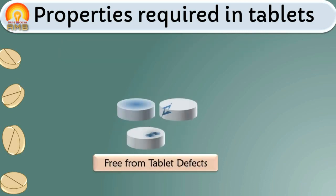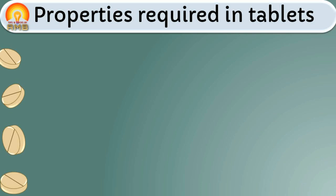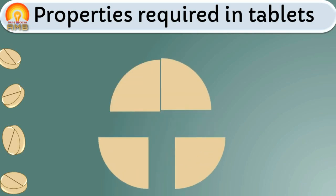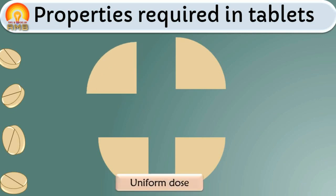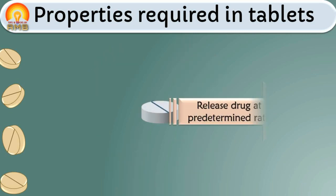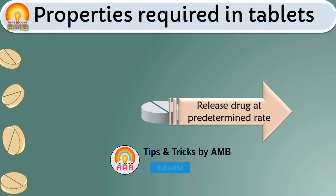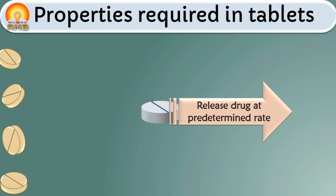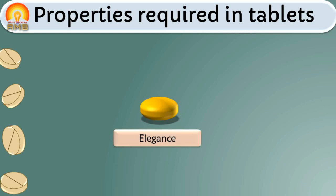Tablets should not have any defects like chipping, cracking, discoloration, or contamination. Each tablet should contain a uniform dose — that is a main requirement. Tablets should release the drug in a predetermined manner after administration, with no fluctuations in the release pattern. Finally, tablets should have an elegant appearance.